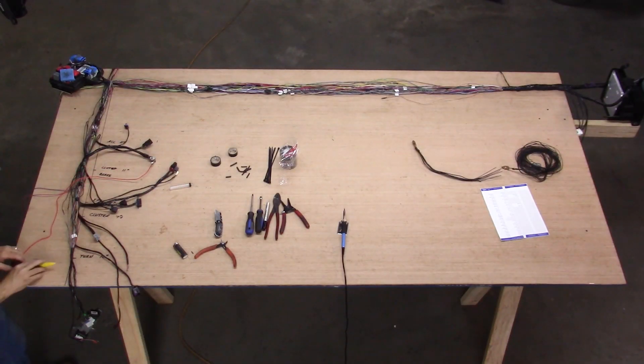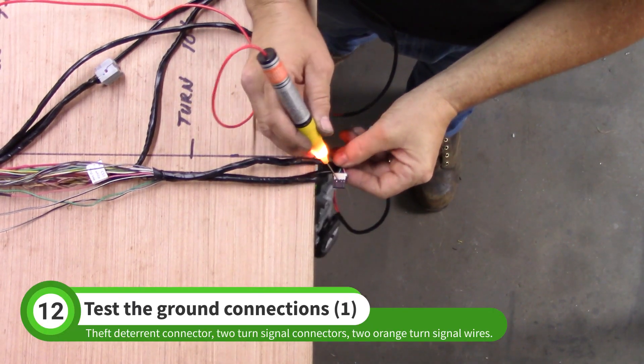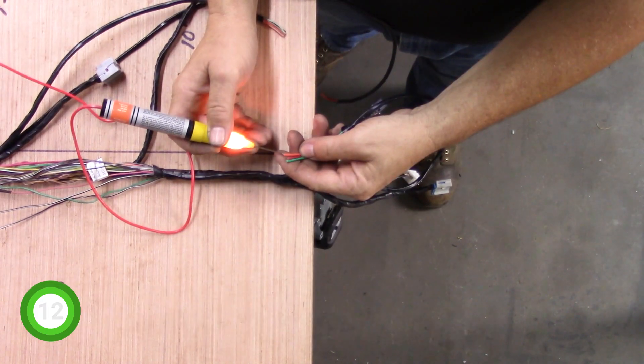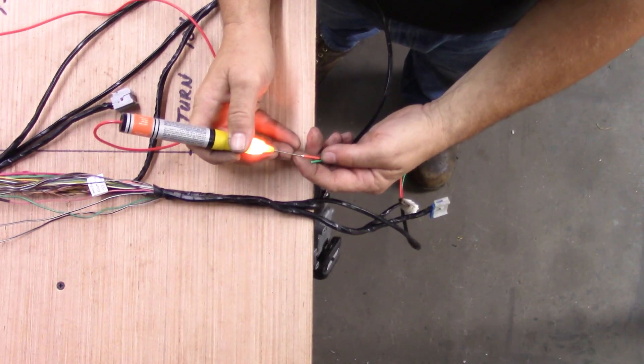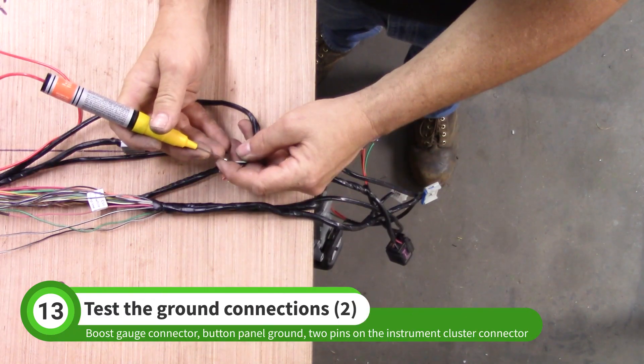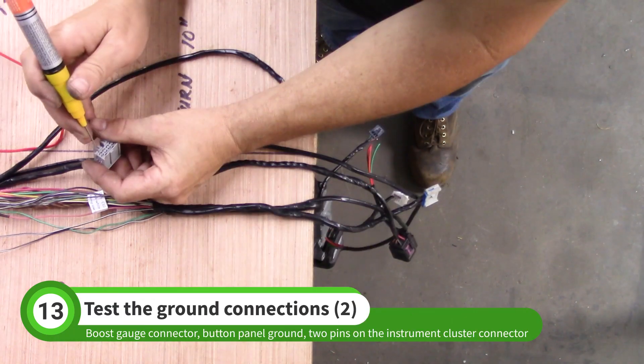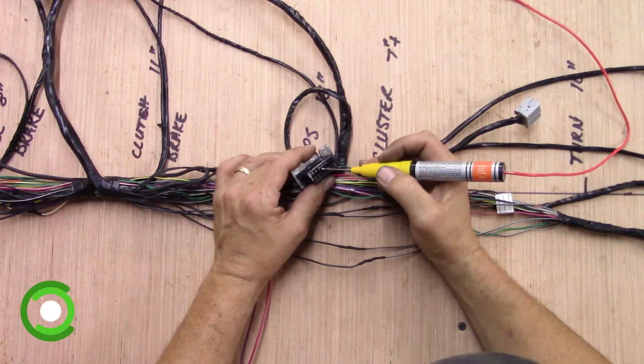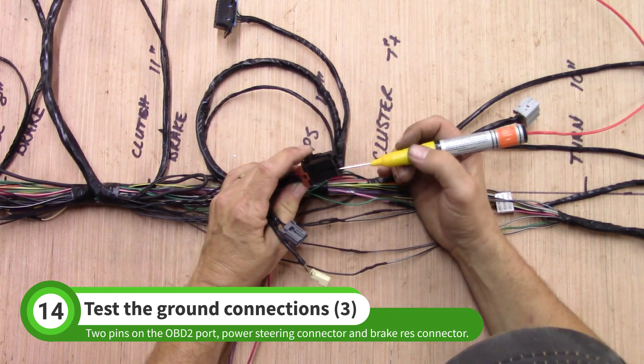This will include the theft deterrent connector, two turn signal switch connectors, two orange turn signal wires, RPD or boost gauge connector, button panel ground, two pins on the instrument cluster connector, two pins on the OBD2 port, power steering connector.